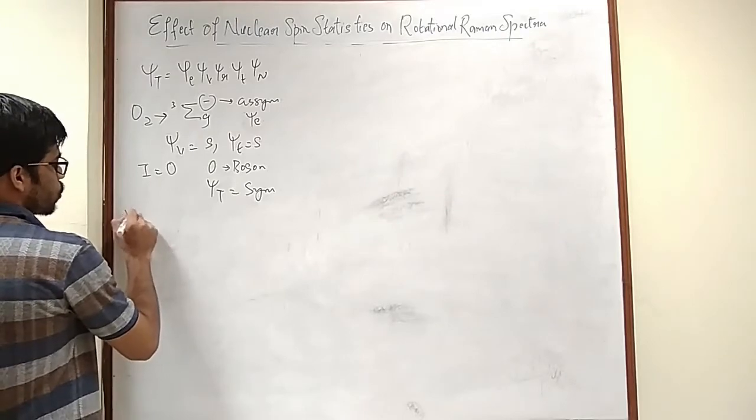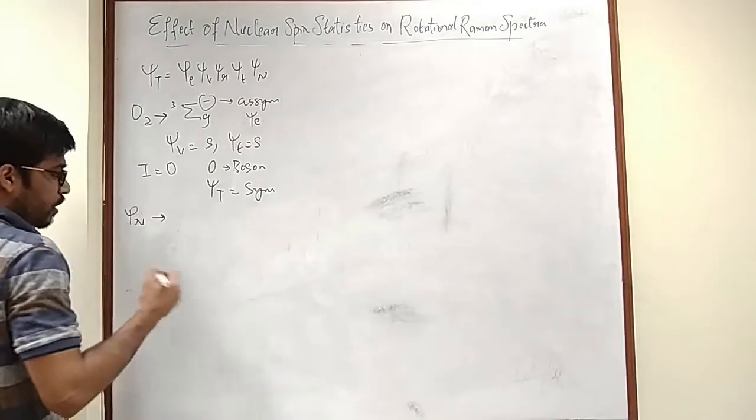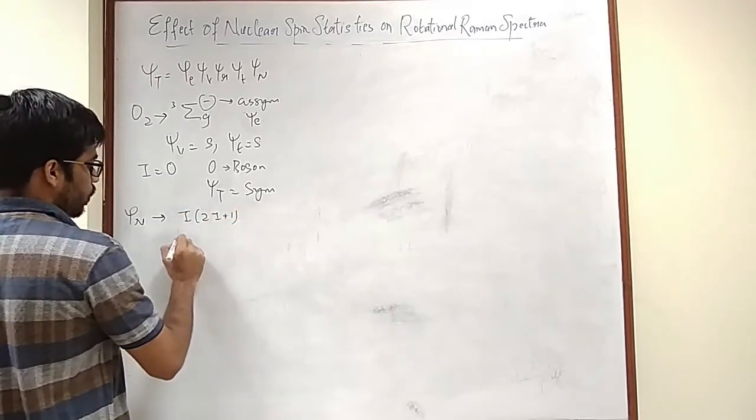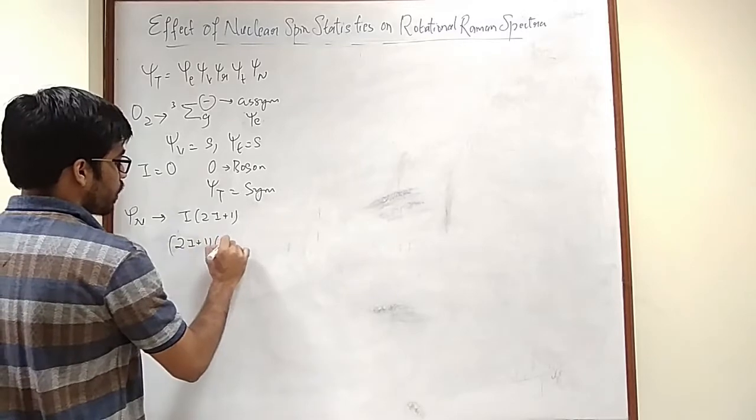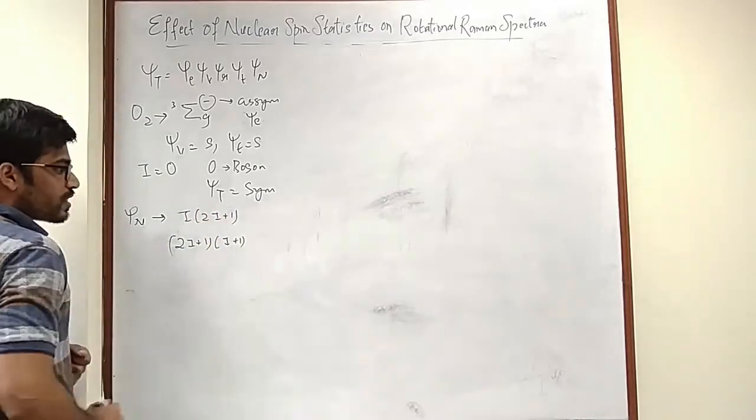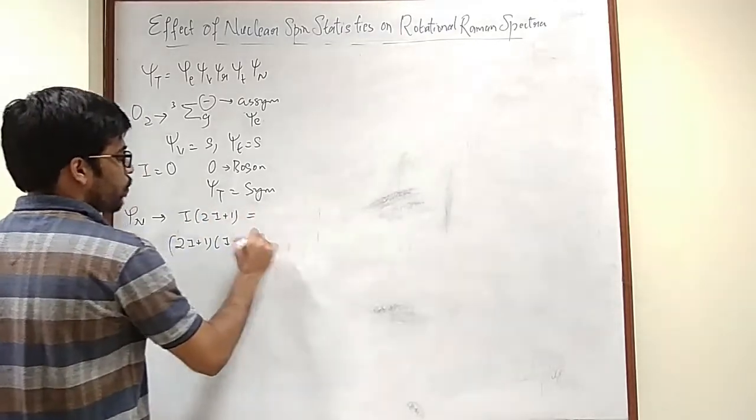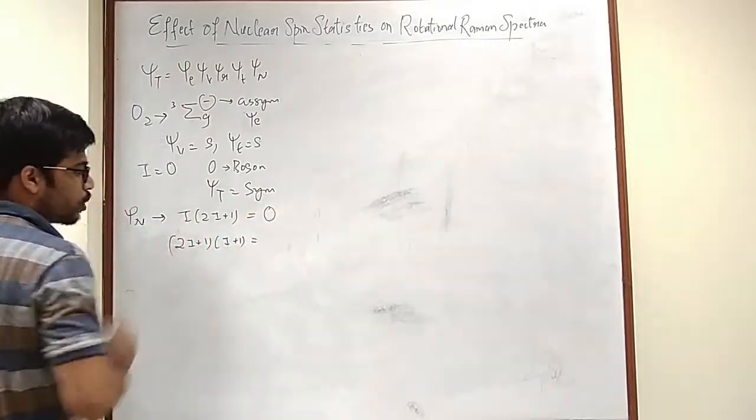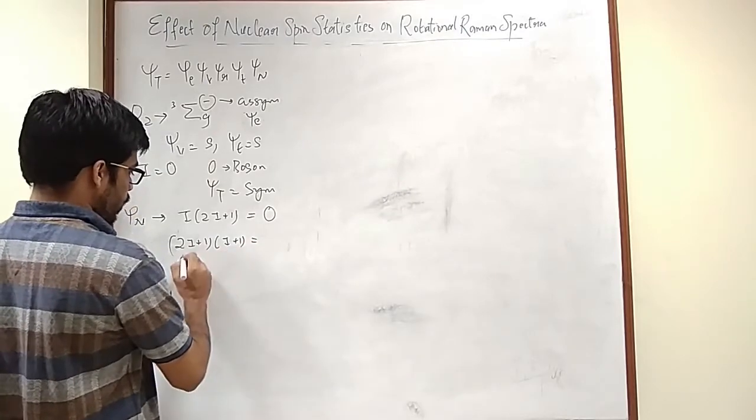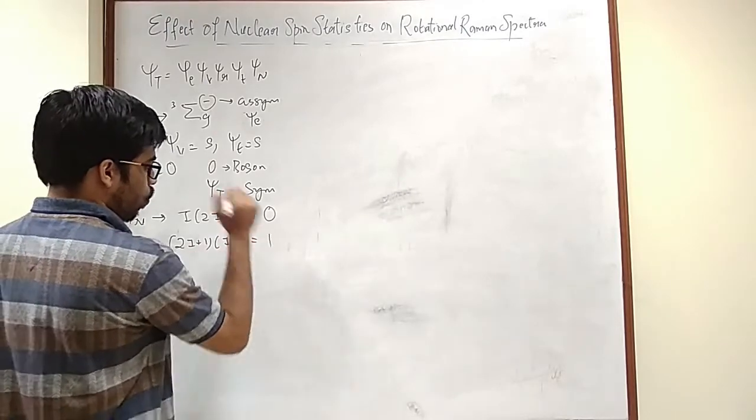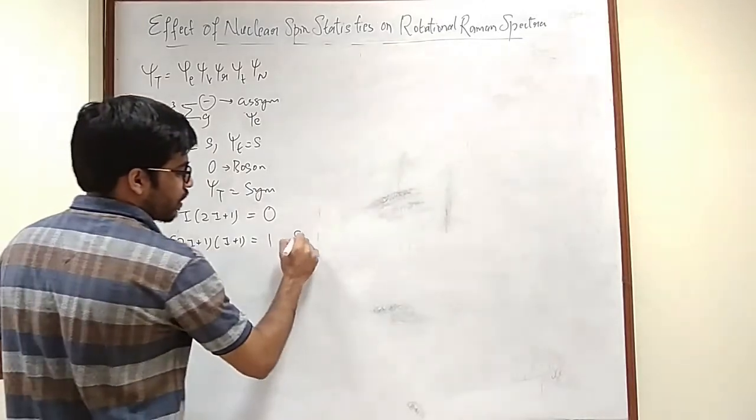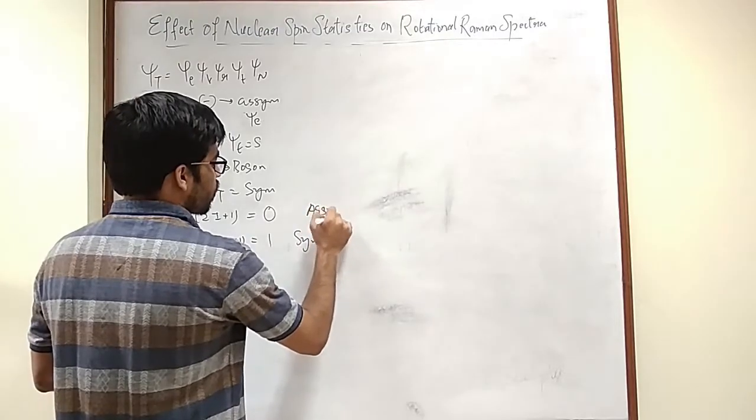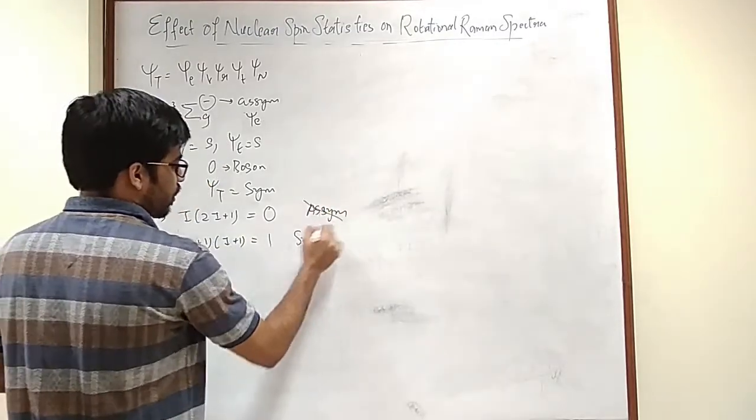Now I is equal to zero. So what about the nuclear wave function? I into 2I plus 1 and 2I plus 1 into I plus 1. Which of this is non-zero will define whether the nuclear wave function is symmetric or asymmetric. In this case this will be 1 into 1. So if this is non-zero then it is symmetric. If this is non-zero this is asymmetric. In our case it is symmetric.